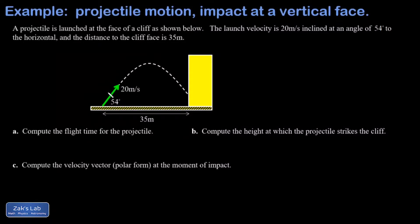In this problem we're launching a projectile from ground level into the face of a cliff. We're given all the parameters: a 20 meter per second launch speed at an angle of 54 degrees above the horizontal, and the cliff face is 35 meters away.